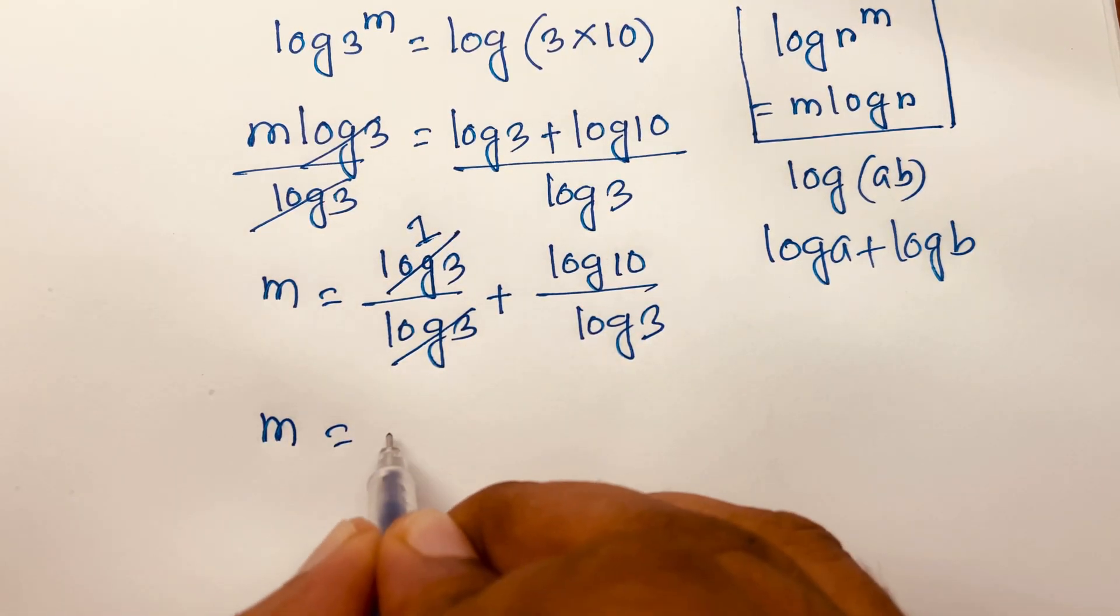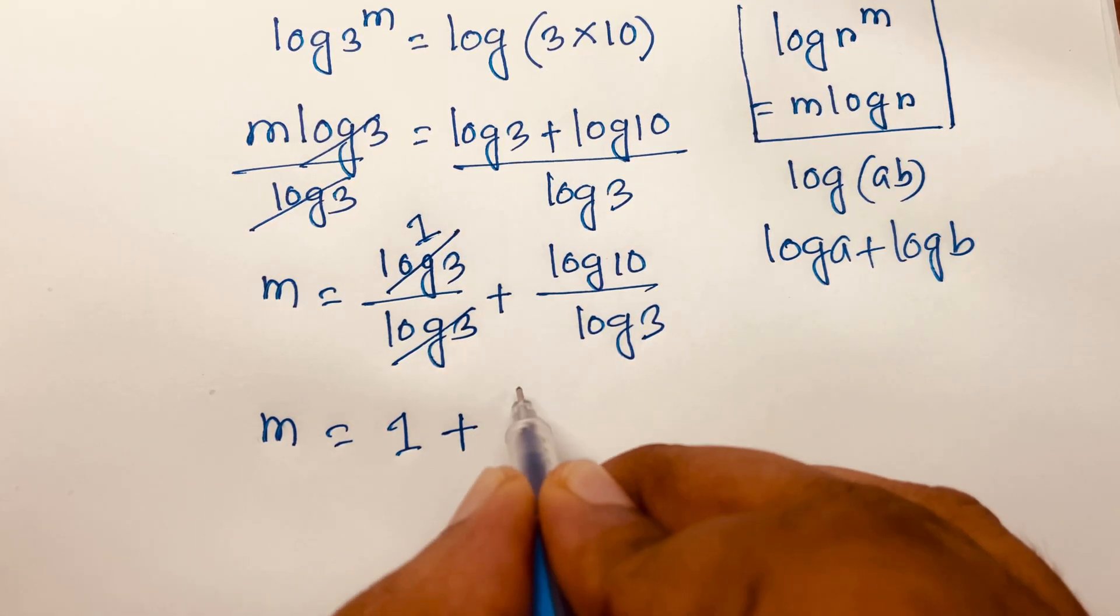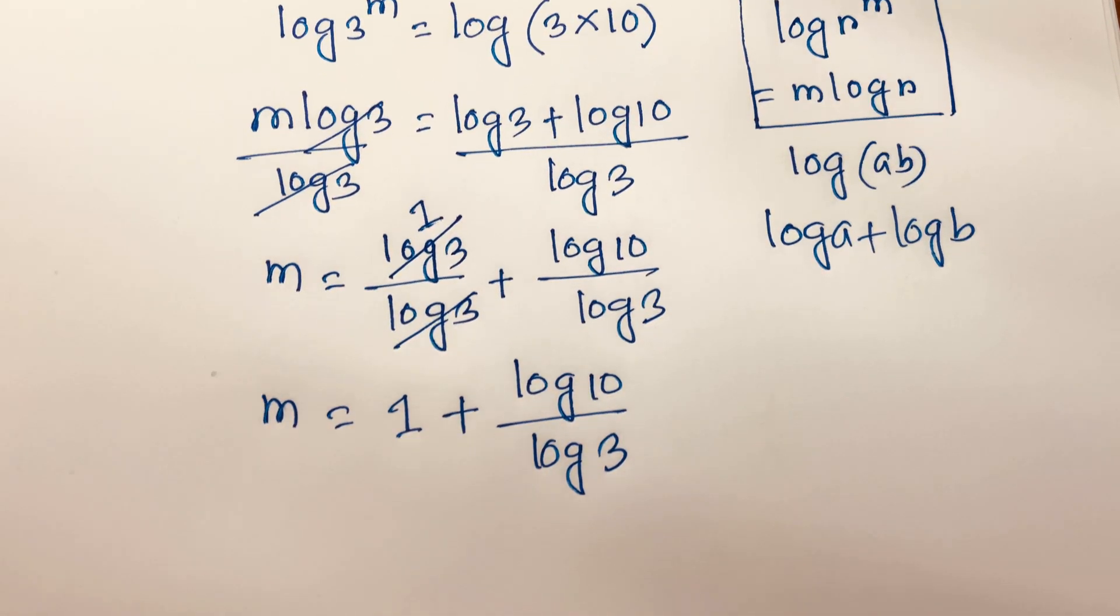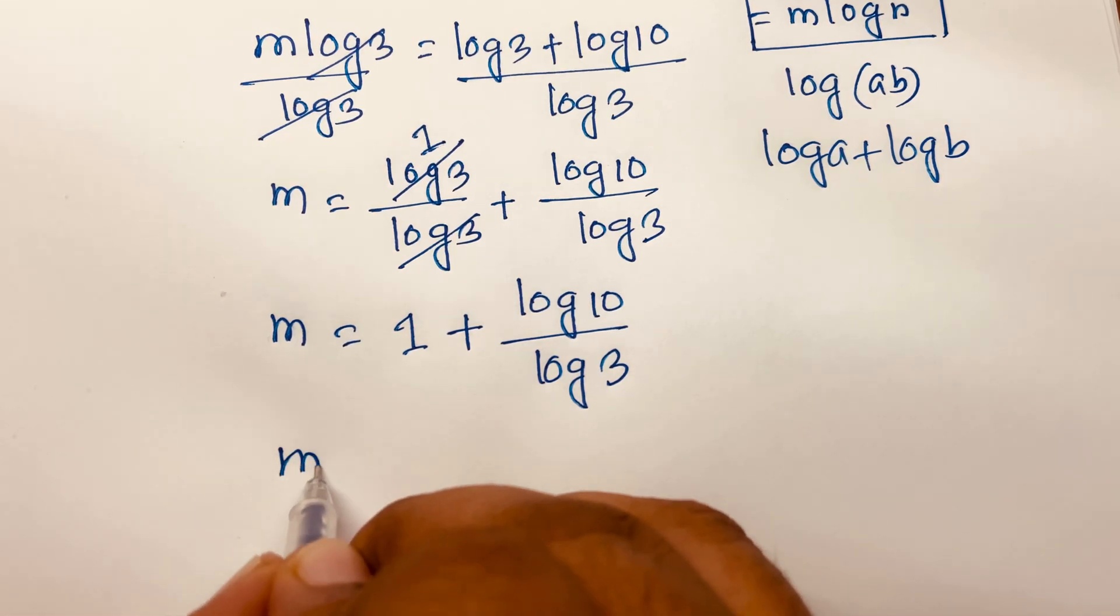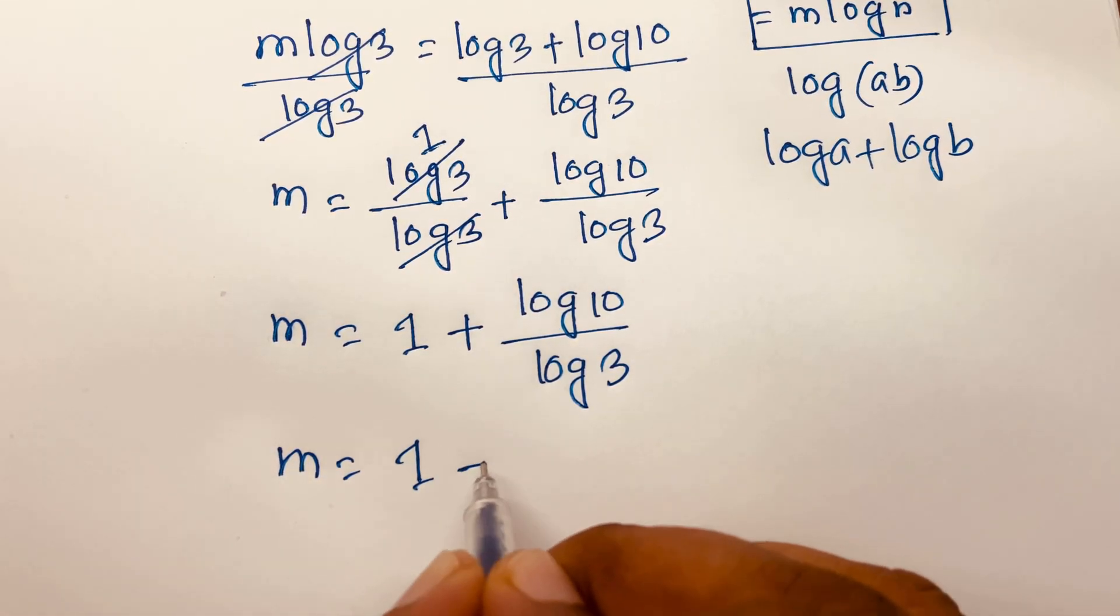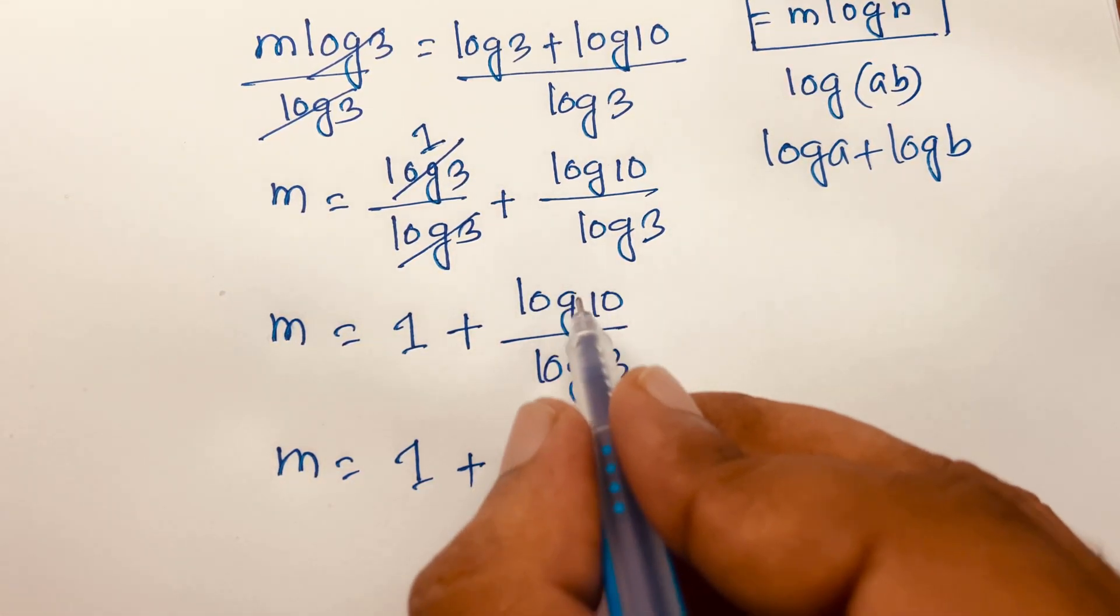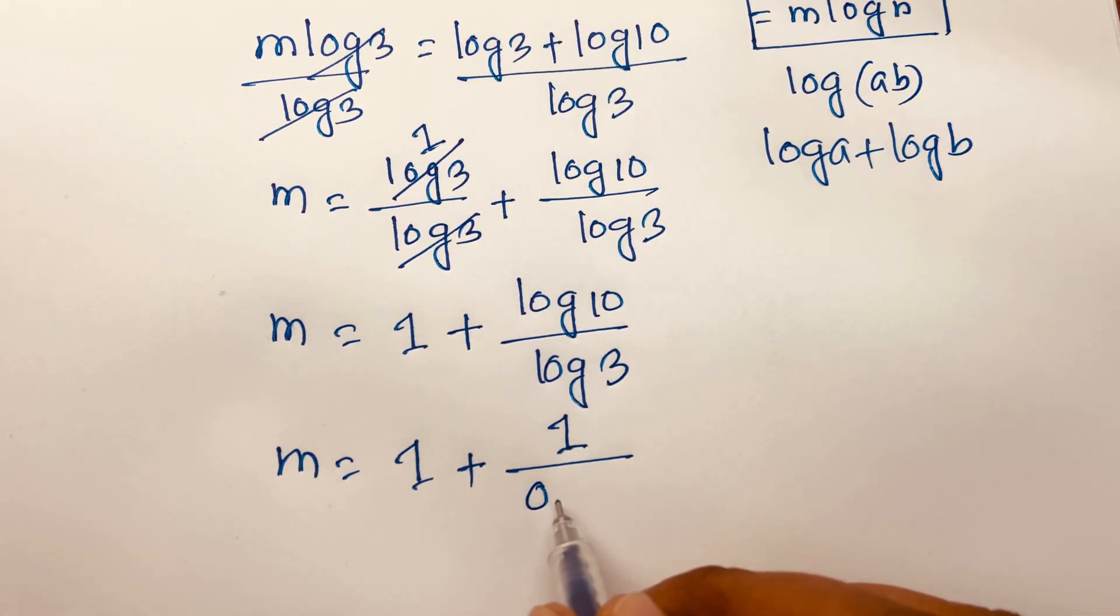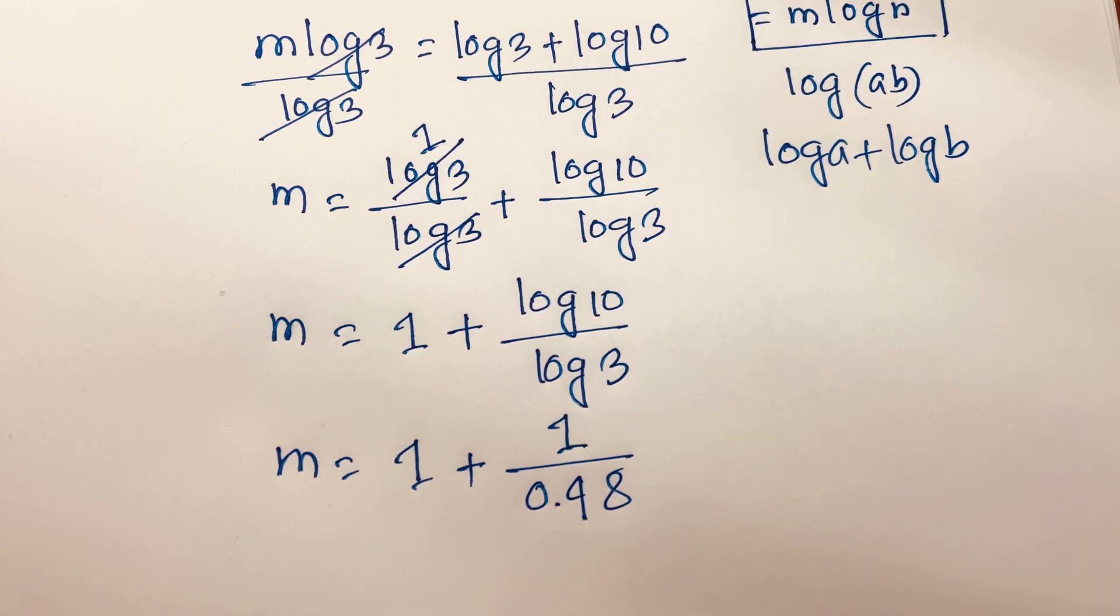So m equals 1 plus log 10 over log 3. If I use a calculator, log 10 equals 1 and log 3 equals 0.48.